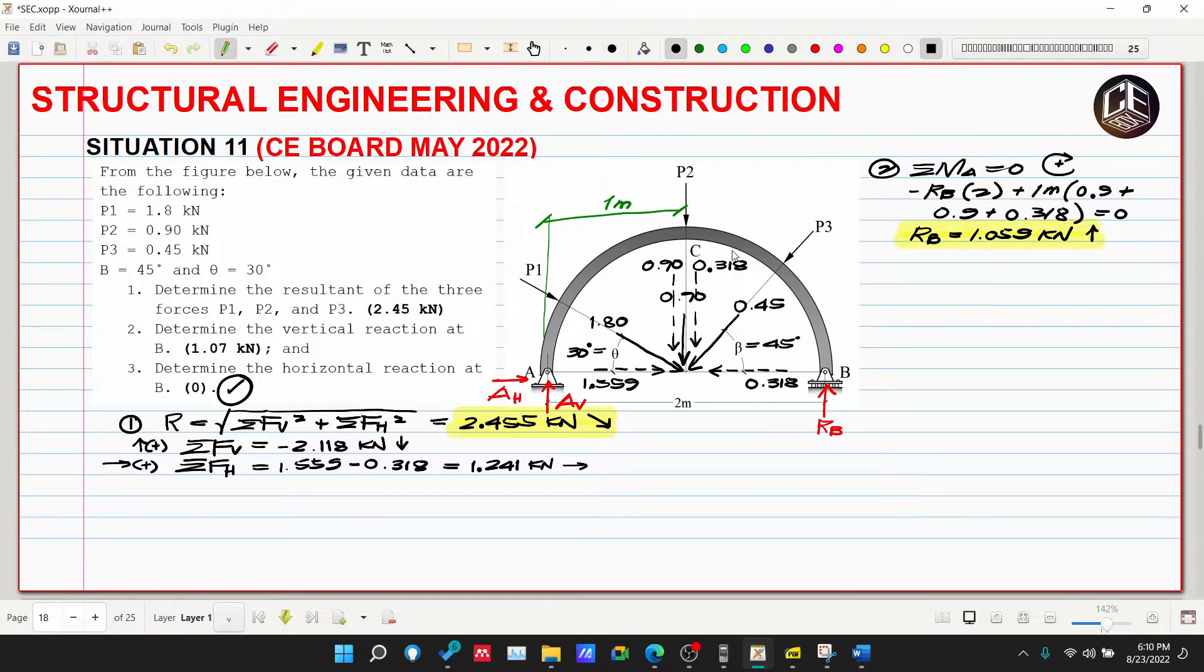Ngayon kung sakali man na pina-solve yung sa AV, okay lang din naman. So parang problem number 4, ayan. Kung sasolve natin ang ating AV, we will use summation of force vertical is equivalent to 0. Upward is positive: AV then plus 1.059 that is RB, then minus 0.9 minus 0.9 minus 0.318 is equivalent to 0.